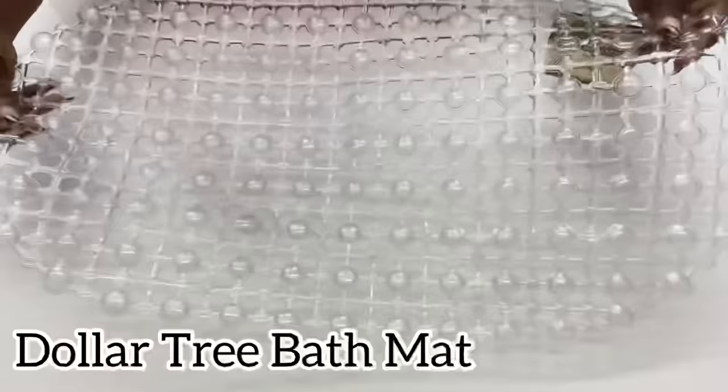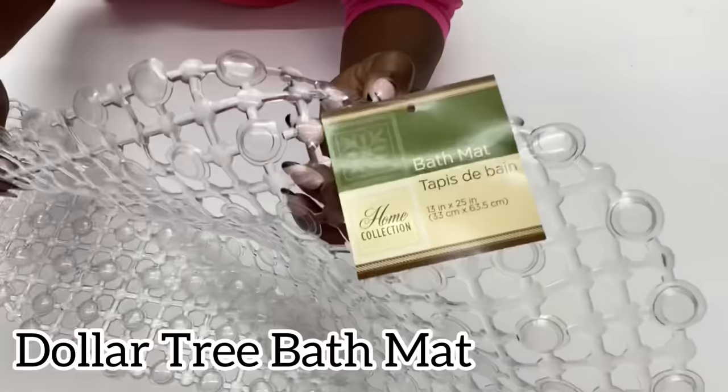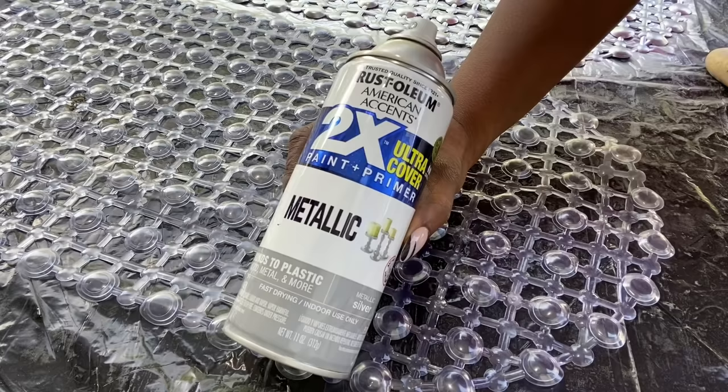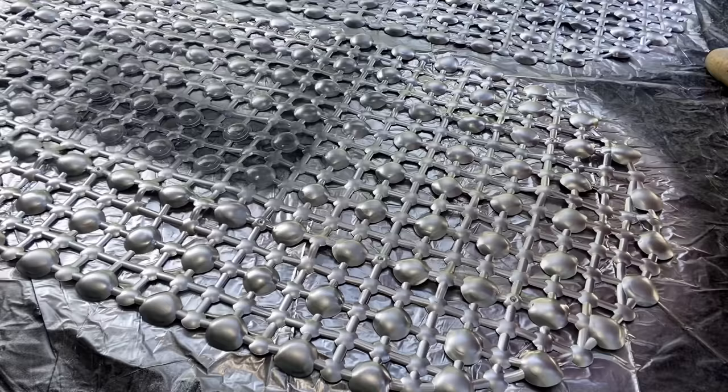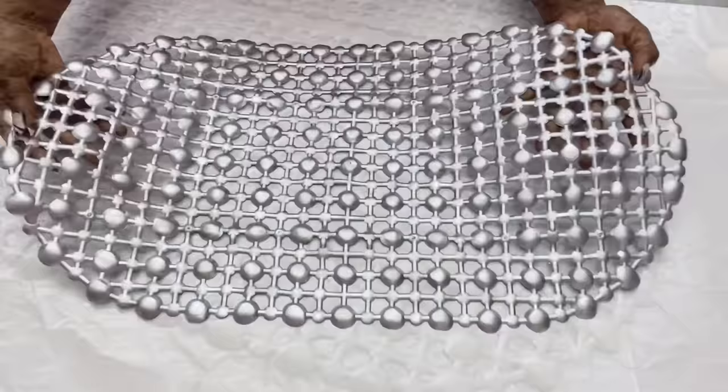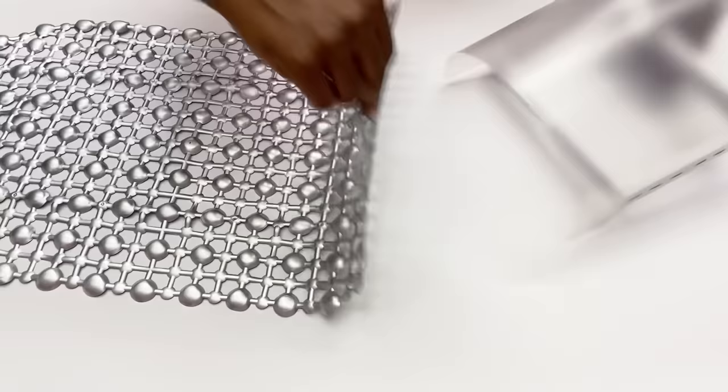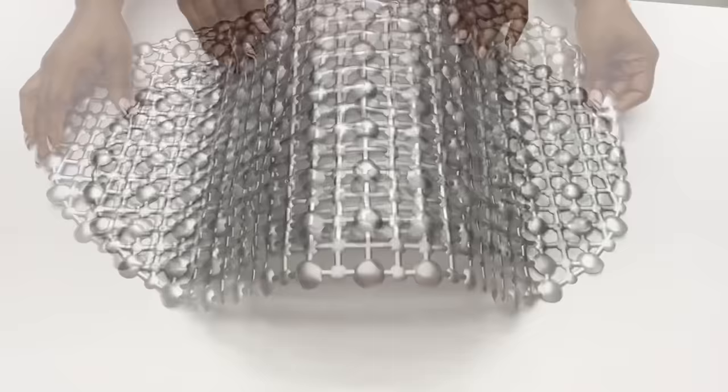I'm also going to be using a Dollar Tree bath mat for this project. I'm going to take this out and spray paint it silver. Now I'm going to go ahead and attach the bath mat to what I've just made. The staple pins are going to be covered with the bath mat.